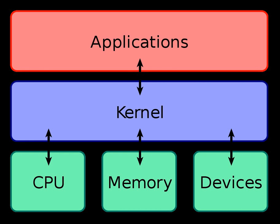The kernel must maintain the list of devices by querying the system for them, through the BIOS or through one of the various system buses. When an application requests an operation on a device, the kernel needs to send this request to the current active video driver. The video driver, in turn, needs to carry out this request. This is an example of inter-process communication.